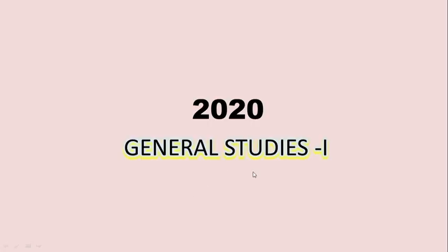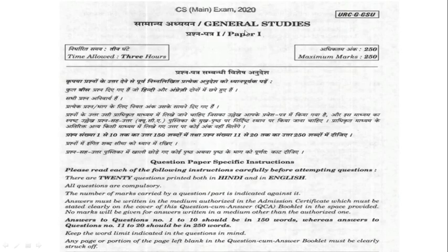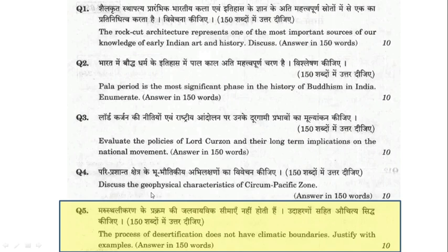In the 2020 GS1 Mains paper — a 3-hour paper of 250 marks with 20 compulsory questions — environmental questions included: 'The process of desertification does not have climatic boundaries. Justify with examples.' This question is related to geophysical phenomena and changes in geological structure, specifically land undergoing desertification.